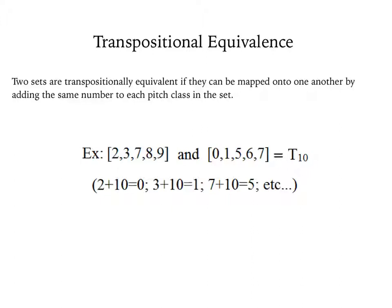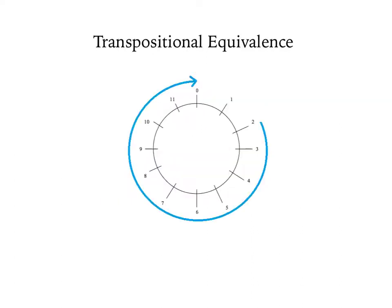Why is it 10 and not negative 2, you might ask? We always transpose the first set into the second set, working left to right, going clockwise around the clock face. Therefore, our transpositional operator will always be a positive number.